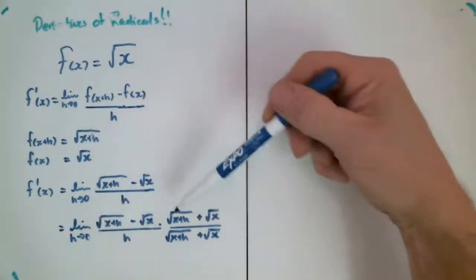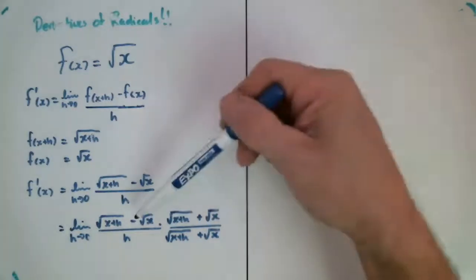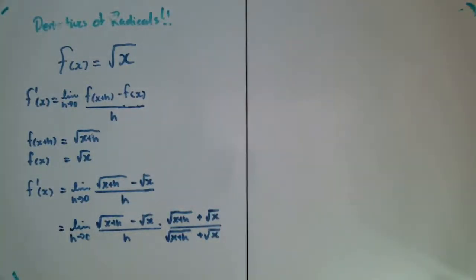And so notice I've selected my conjugate. All I have to do is change the sign that's between the two radical expressions. This is going to magically, or mathematically rather, mathematically remove the radical expressions from the numerator. Maybe I can get something that makes sense when I do that.